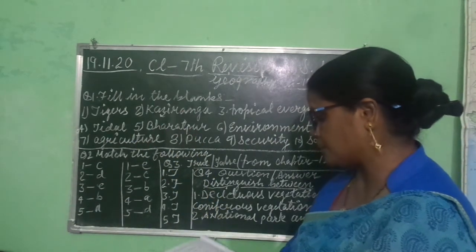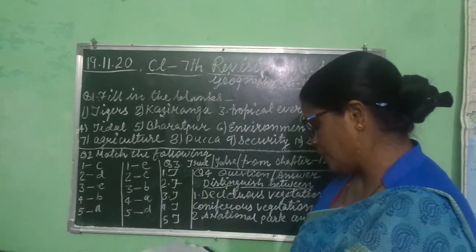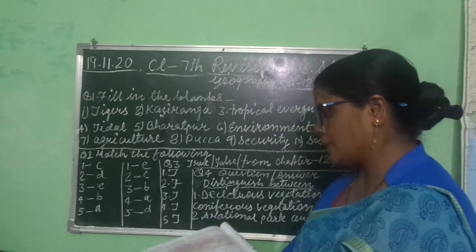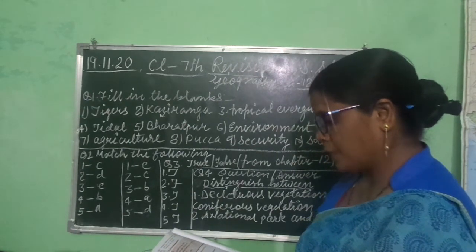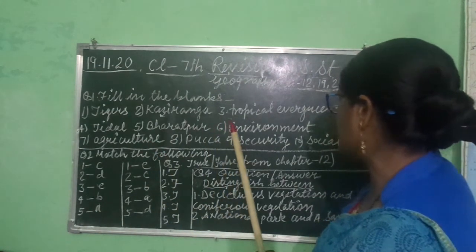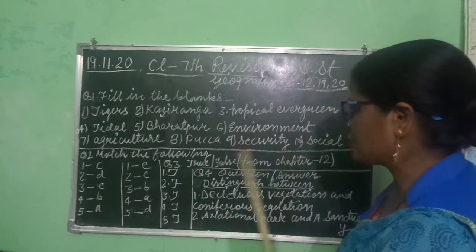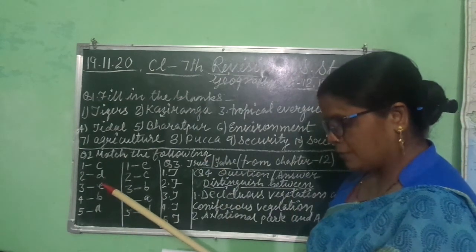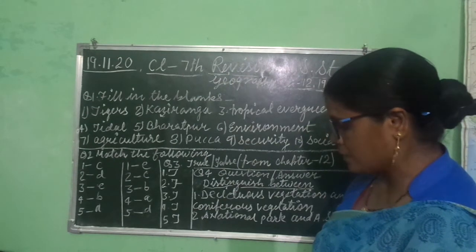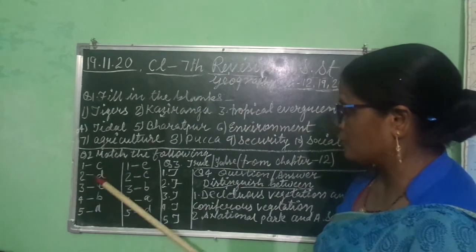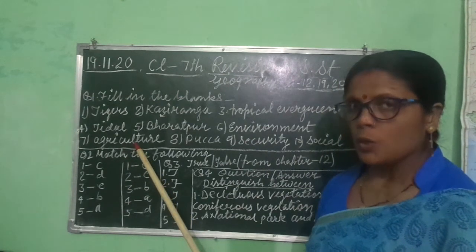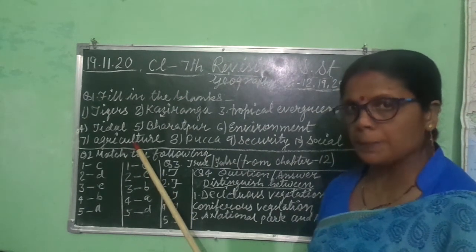Now let's move towards chapter 20 fill in the blanks. Early man was the slave of the environment. Next, the invention of agriculture forced man to give up his nomadic existence. Agriculture ki development ke wajah se unko nomadic life chhodni padi thi.